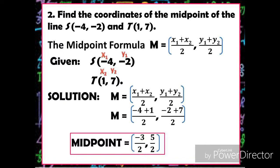Next example: find the coordinates of the midpoint of the line segment ST, where point S is negative 4, negative 2, and point T is positive 1, positive 7. Again, we're going to use the midpoint formula. The given are point S: negative 4 is X₁, negative 2 is Y₁; and point T: 1 is X₂, 7 is Y₂.